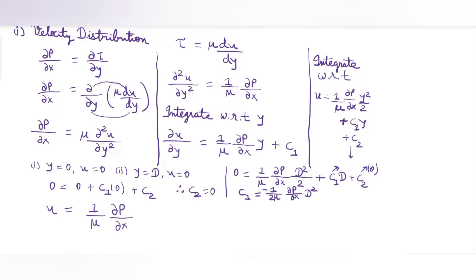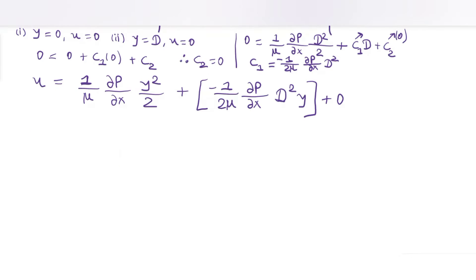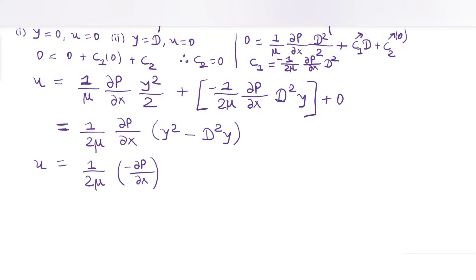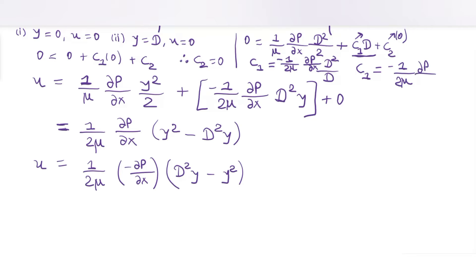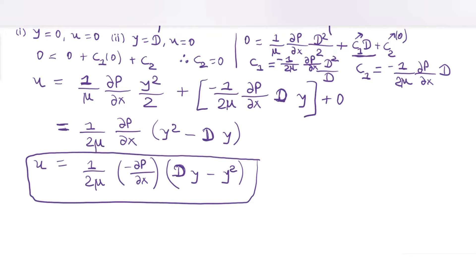With C₁ and C₂ determined, substituting into the expression for u: u = (1/2μ)(−∂P/∂x)(Dy − y²). In this equation, ∂P/∂x, μ, and D are constants, and u varies with the square of y. So for the case of parallel plates, we have a parabolic profile of velocity distribution.